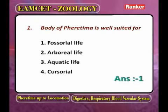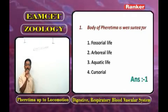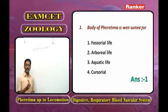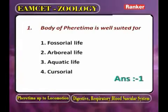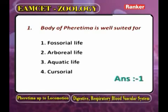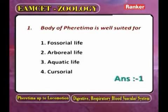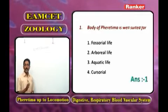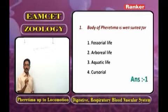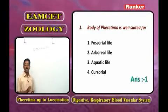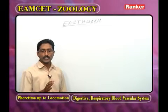The common name of Pheretima is earthworm. The body is elongated — the anterior end is slightly narrow and the posterior end is broad. Options: fossorial, arboreal, aquatic, or cursorial. Cursorial means running fast; aquatic means living in water; arboreal means living on tree branches. The body of Pheretima is suited to live in burrows, so the answer is fossorial — the first option.